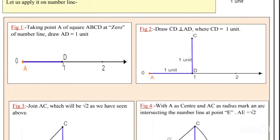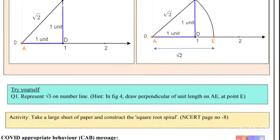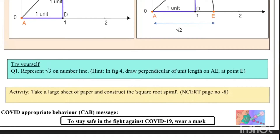We have a number line divided into units 1, 2, 3. We take one unit length and mark point D. At D, we draw a 90-degree angle, and line DC has a length of one unit. So we have one unit base and one unit height, giving us one squared plus one squared equals two.